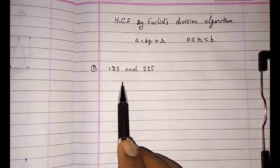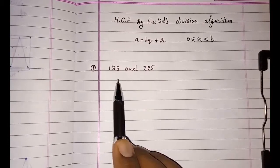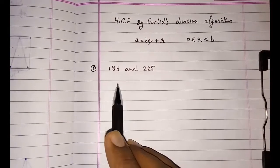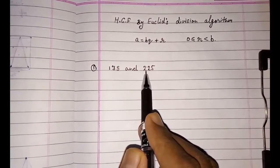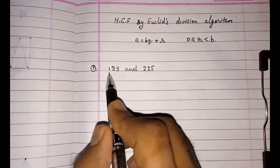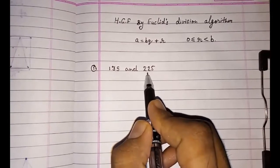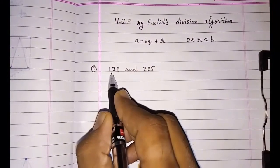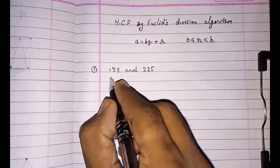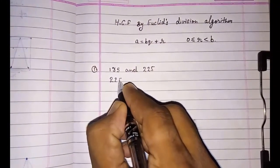The same thing we are going to solve here. First, for finding the HCF of these two numbers, we have to check which one is greater. We can see that 225 is greater, so this will be our dividend and 135 will be our divisor. So 225 equals 135...